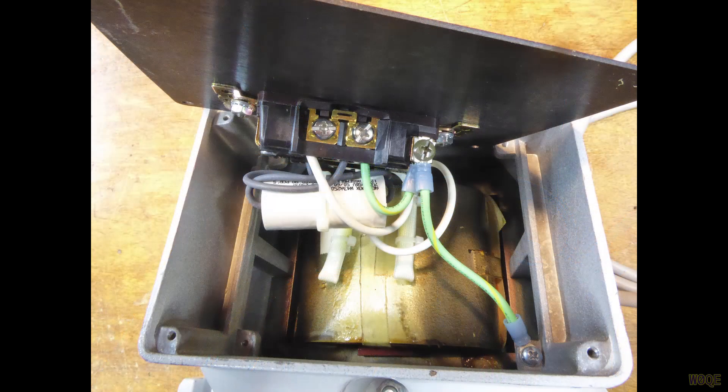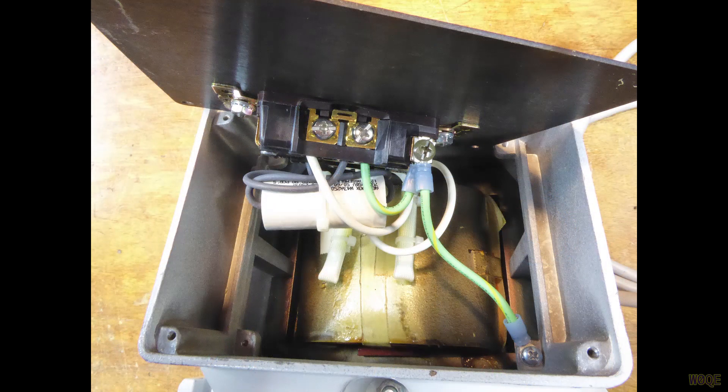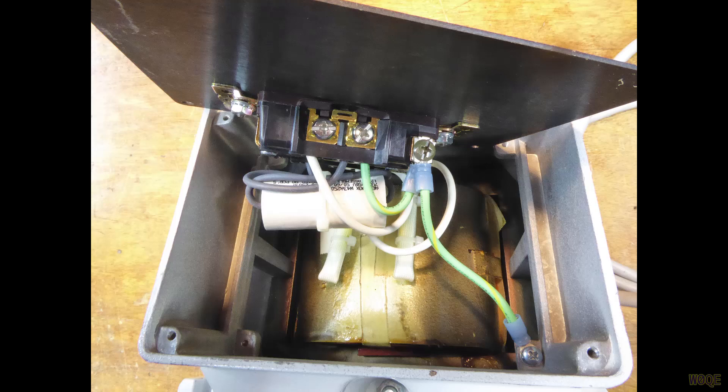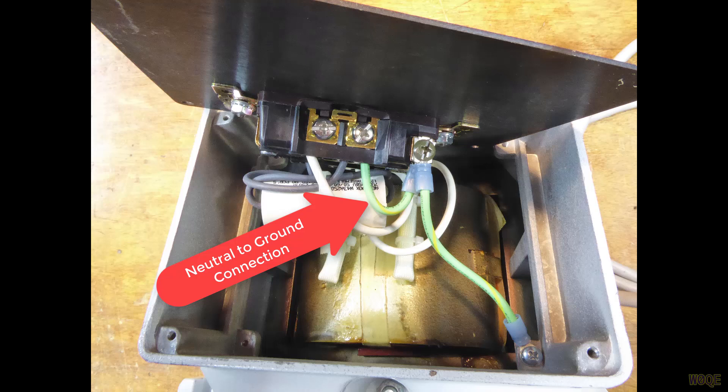The output side when opened shows more good construction with a 7 microfarad AC rated film capacitor across the secondary side of the transformer. However there is a major problem with the neutral wire of the AC output being directly connected to green wire ground. This makes the use of this transformer dangerous for general purpose isolation transformer use, but I'm quite sure that this wiring was done by the factory.